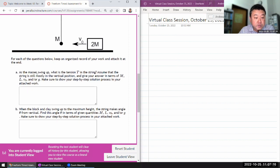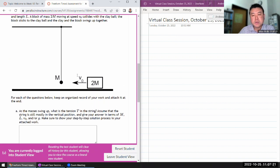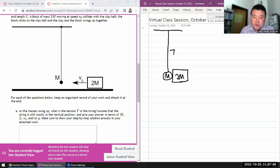It says as the masses swing up, what is the tension T in the string? So I'm thinking of a picture where I have some mass here stuck to M, and there's a thing that's hanging here, and there's some kind of tension in the string that I need to think about. I think it's useful to draw a free body diagram just to make sure I'm grounded correctly.